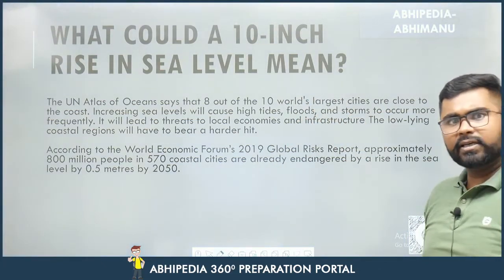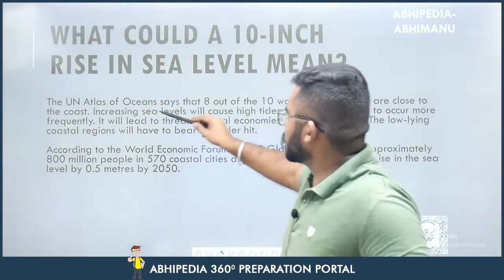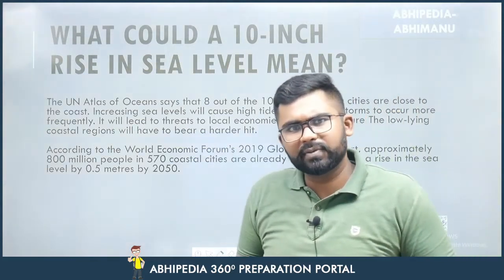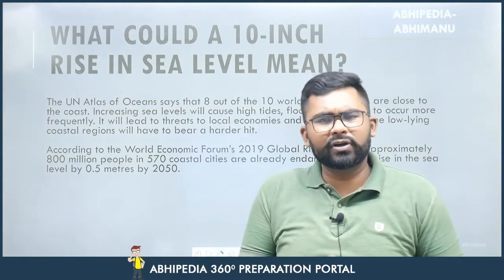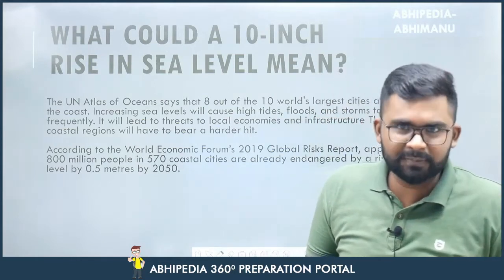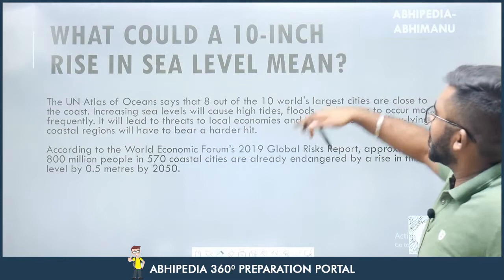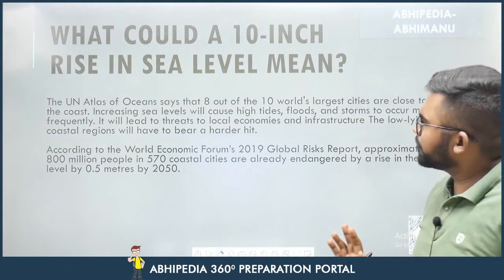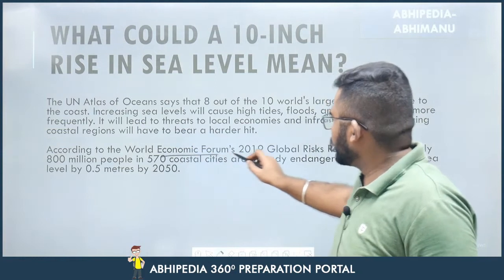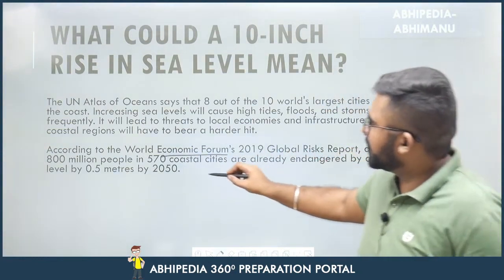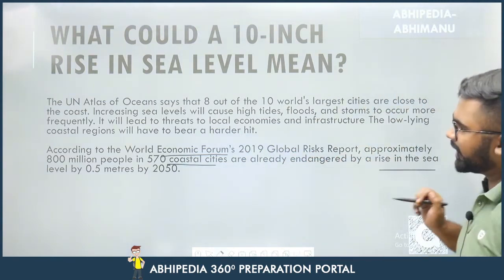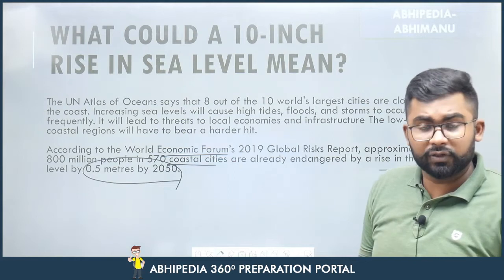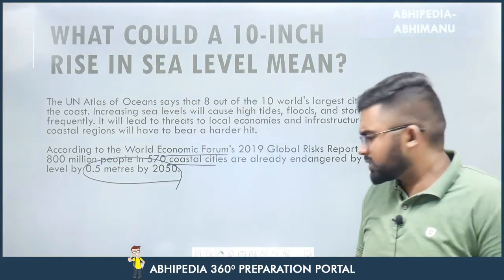Two key data points on the consequences: Number one, the UN Atlas of Oceans states that 8 out of 10 of the world's largest cities are close to the coast. Increasing sea levels will cause high tides, floods, and storms to occur more frequently, leading to threats to local economies and infrastructure. The World Economic Forum's 2019 Global Risk Report states that 800 million people in 570 coastal cities are already endangered by a rise in sea level of 0.5 meters by 2050.